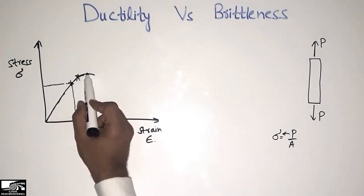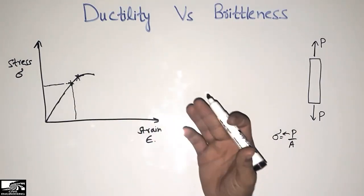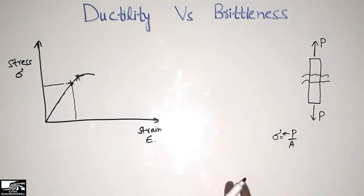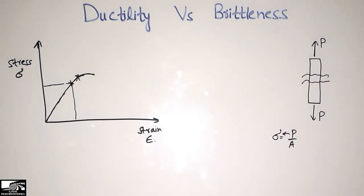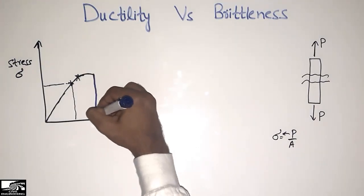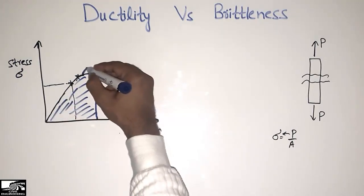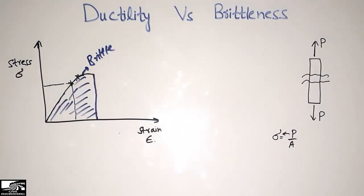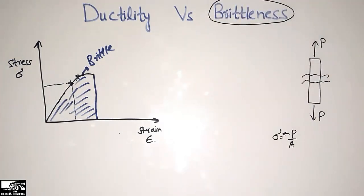After reaching the yield point, a brittle material does not take or store any further energy to elongate — it breaks directly into two pieces. The energy stored in this material is represented by the area under this graph. This is the brittle material: it shows very little plastic deformation after the elastic limit.